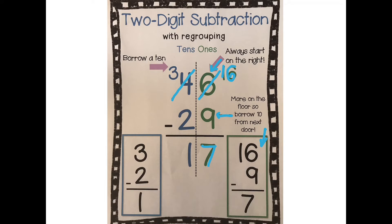Then we go over to our tens. We have 3 take away 2, and that is 1. So our answer is 17. Remember: starting on the right, we start in the ones column. Look at the floor — is there more on the floor than there is on top? If there's more on the floor, we need to go next door and borrow a 10.